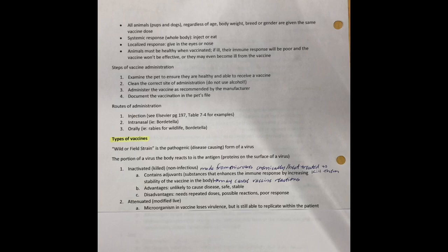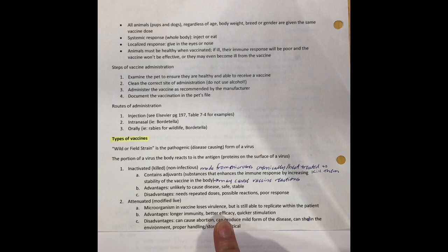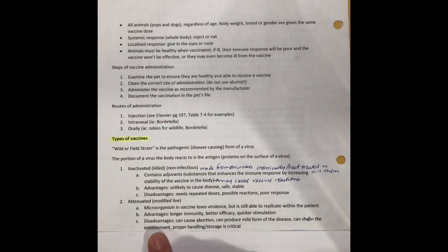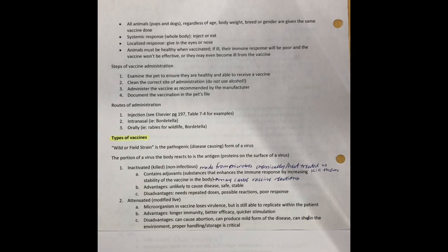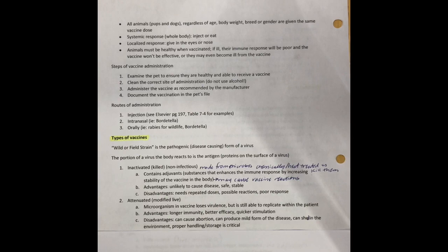The next type is the attenuated or modified live vaccine. These are microorganisms that are alive but have been modified so they're not virulent or able to cause disease, while still able to replicate in the patient. Because they're able to replicate, we're going to see longer immunities, better efficacy, and a quicker stimulation of the immune response. Disadvantages: it could cause abortion in pregnant animals, it could produce a mild form of the disease because it's still alive, and that can be shed in the environment. Proper handling and storage is also critical — most vaccines need to be kept in the fridge, and any temperature fluctuations in a modified live can damage the vaccine.